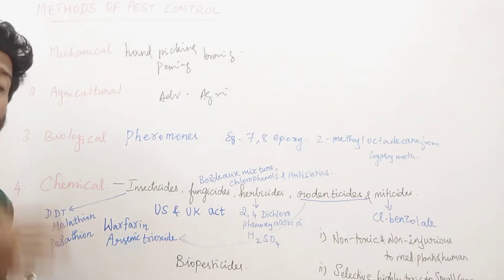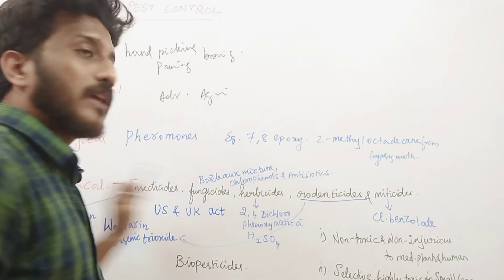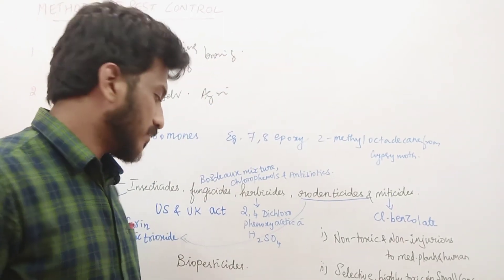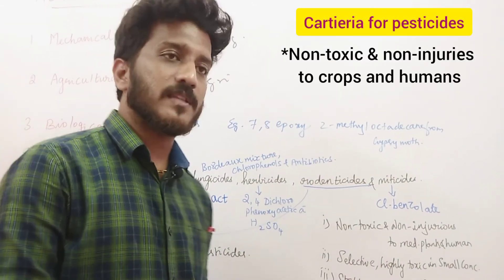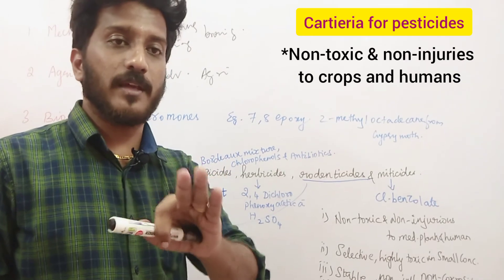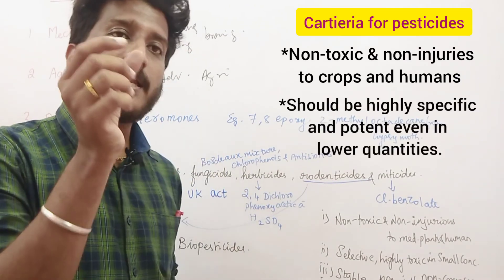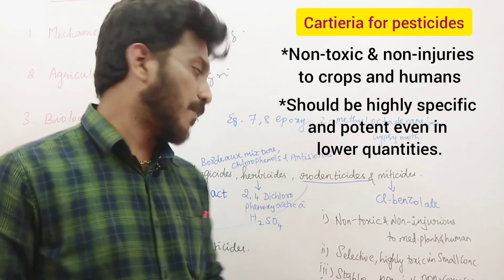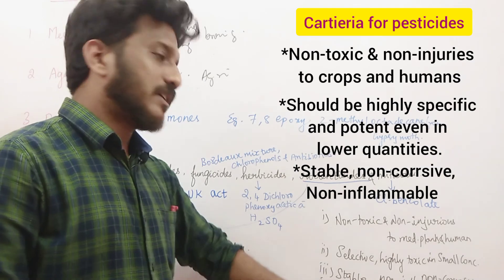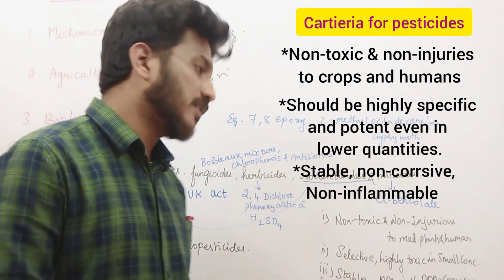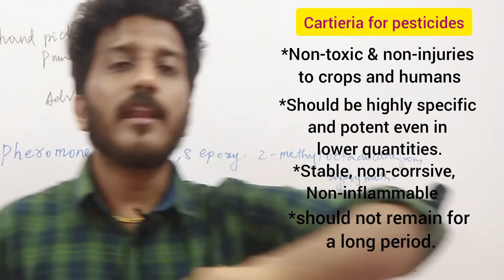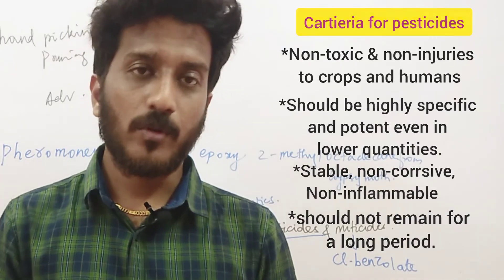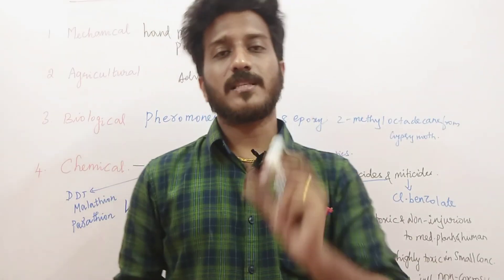The US and UK have separate acts to regulate the use of these pesticides, and certain chemicals are banned. Any chemical used should be non-toxic and non-injurious to medicinal plants and human beings — it should only affect the insects. It should be highly selective and highly toxic even in small concentrations. It should be stable, and should not be toxic or corrosive to crops, so that it does not affect subsequent crops. These are the characteristics of a pesticide.